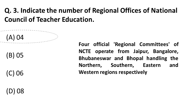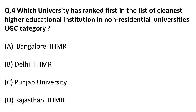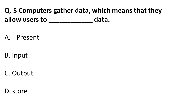The next question asks which university ranked first in the list of cleanest higher education institutes in the non-residential universities UGC category. This is from current affairs on Swachata Ranking Awards. In the non-residential University UGC category, Rajasthan IIHMR — the Indian Institute of Health Management and Research — was the topper and winner.